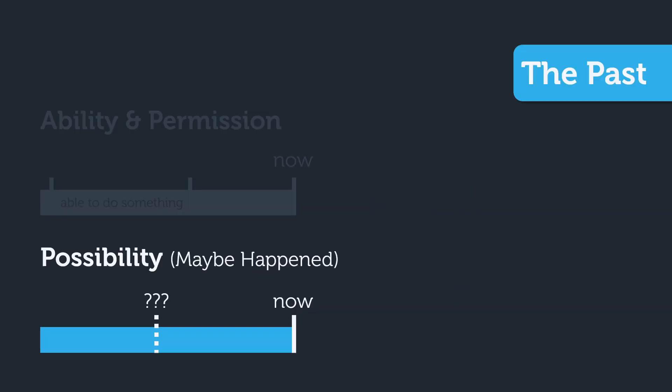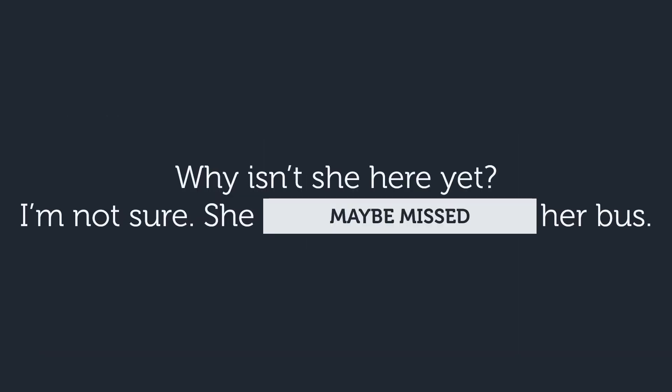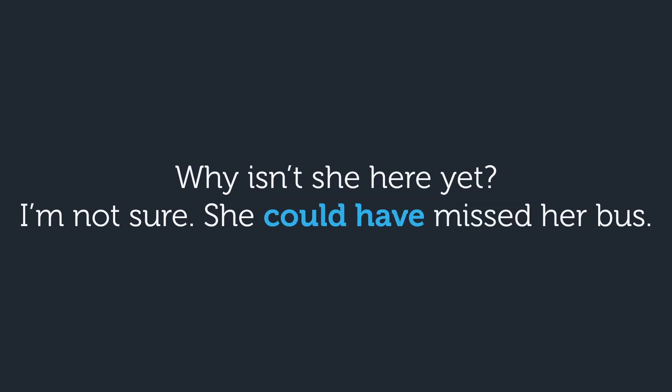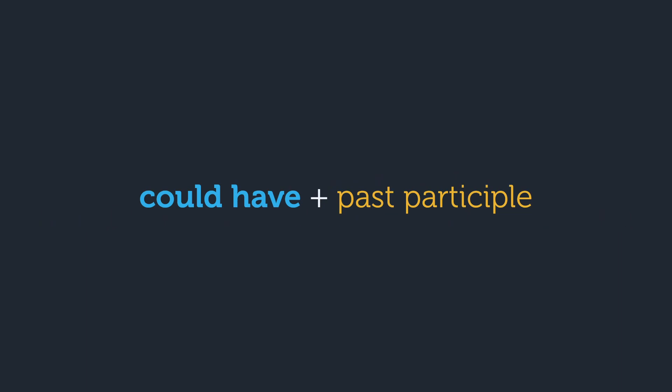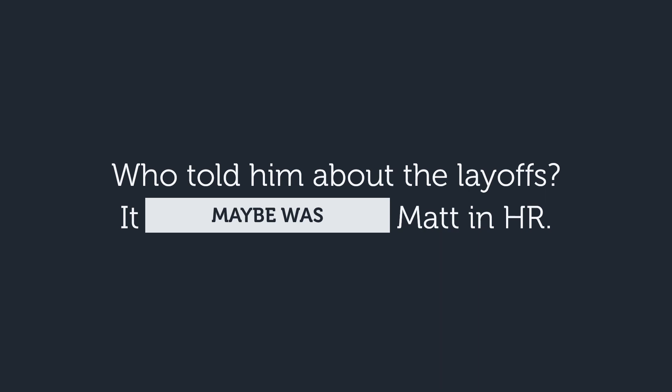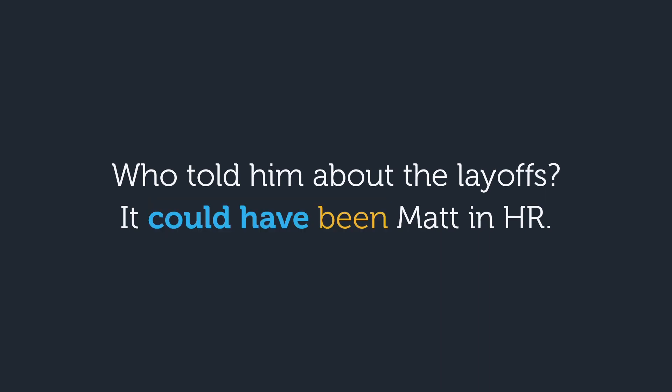Another way to use 'could' in the past is to talk about a possibility that maybe happened. For example: Why isn't she here yet? I'm not sure — she could have missed her bus. When we talk about the possibility of something that maybe happened in the past, we use the construction 'could have' plus a past participle — things like danced, swam, cooked, or been. Another example: Who told him about the layoffs? It could have been Matt in HR.